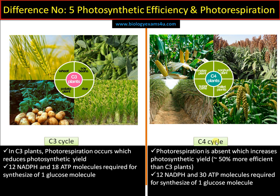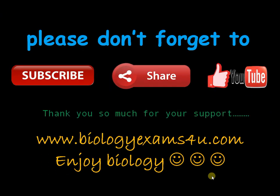For transporting malate from mesophyll cells to bundle sheath cells and regenerating phosphoenolpyruvate, additional ATP is required. So per glucose molecule, 12 NADPH and 30 ATP molecules are required in the C4 cycle — it is a bit more expensive as far as ATP is concerned, but it avoids photorespiration, which is much more adverse. That's it regarding the difference between C3 cycle and C4 cycle. Thank you so much for your support.